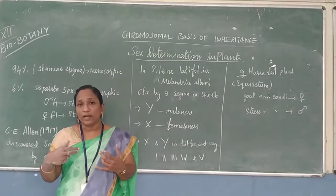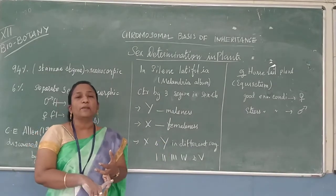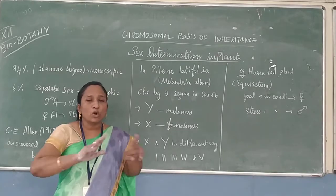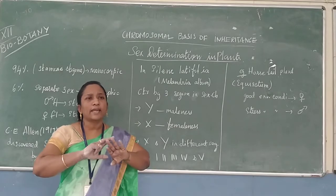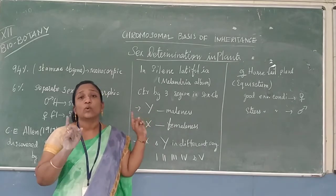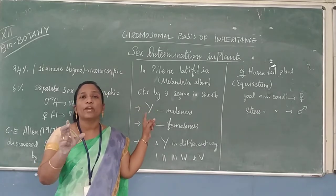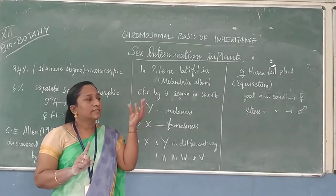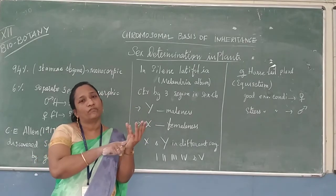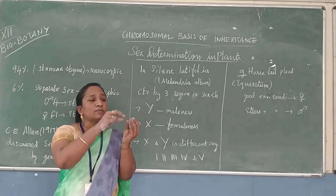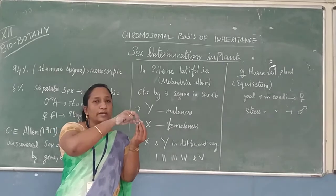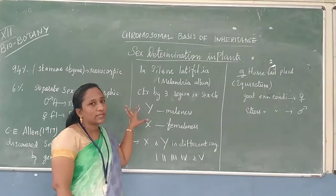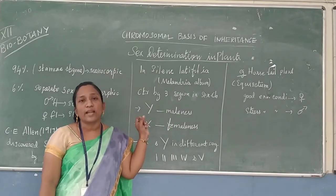To summarize what we learned today: multiple alleles — the definition, and the characteristic features of multiple alleles. Self-sterility means the pollen of the same flower will not form the pollen tube and will not fertilize the same stigma. But the pollen of another plant of the same species can fertilize. This was first observed in Nicotiana, the tobacco variety of plants, by East in 1925. We also learnt how different progeny form — whether effective or not effective — based on the allele combinations.